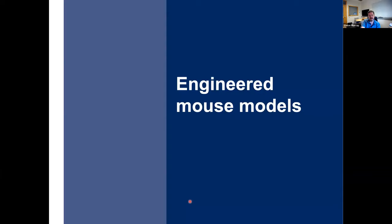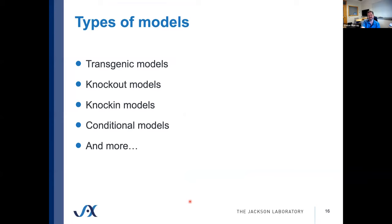But I think most of the things you will encounter as curators will be engineered mouse models, so I just wanted to briefly go through this. There are a number of different types of models. I don't want to get too remedial in terms of the technology, but there are a couple of points I'd like to make along the way. The oldest approach is the transgenic models. There are knockouts, knock-ins, conditional, and many more.